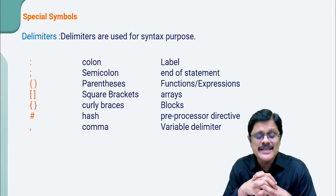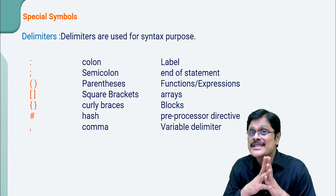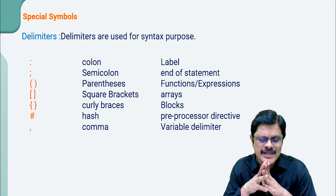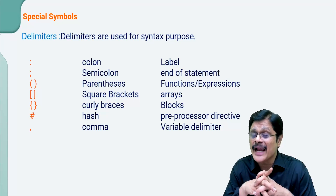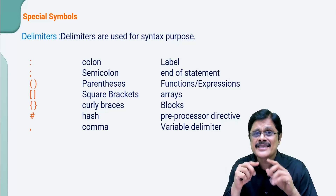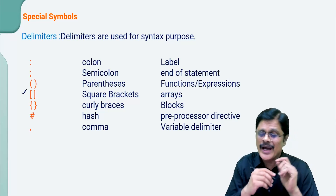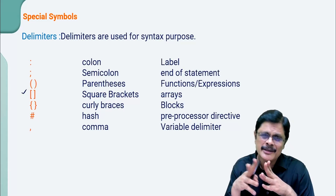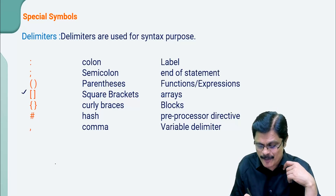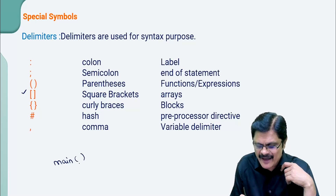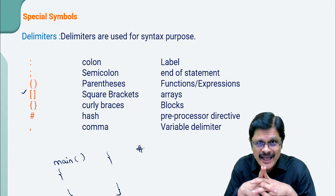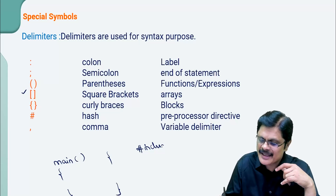Now the next special symbols are delimiters. Delimiters are used for syntax purpose. For example, colon is used for labels like goto label. Semicolon is used for end of statement — each statement in a C program should end with a semicolon. Parentheses are used for functions or expressions. Square brackets are used for arrays — when we cover arrays, we will understand. Curly braces are used for blocks, such as the main block or any function block. The hash symbol is used for preprocessor directives — we already used hash include, hash define, etc.